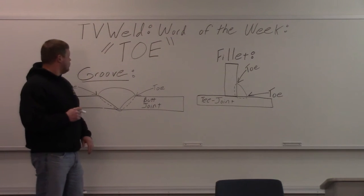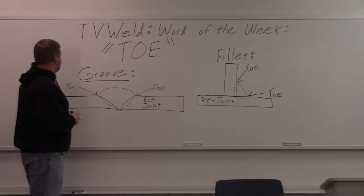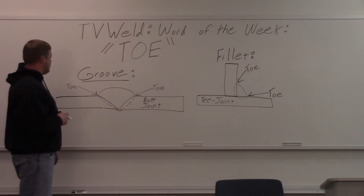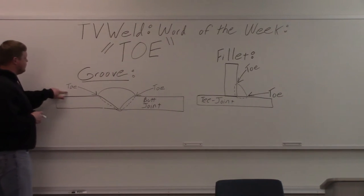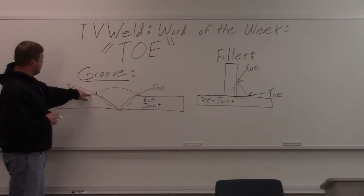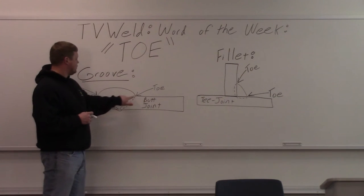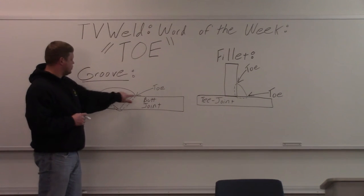What I did here is I drew a groove weld, a fillet weld with a T joint, a butt joint here. It's a single V butt joint over here. I got the toes labeled right here. You can see the toe goes down or points to this spot where the base metal meets the weld face. Over here is the same thing. Base metal meeting the weld face. Those are your toes.